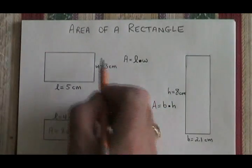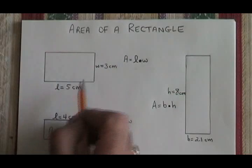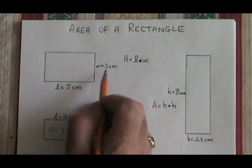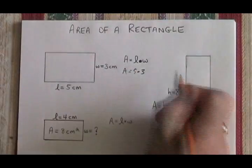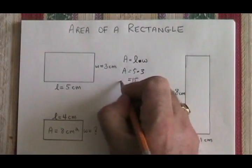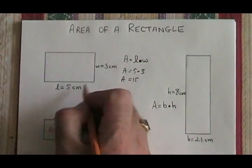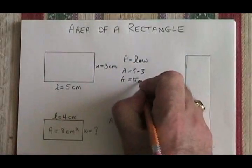In the case of this rectangle, we know the length is 5 centimeters and the width is 3 centimeters. So our area is equal to 5 times 3, which is equal to 15. The unit was centimeters, so the unit of area will be centimeters squared.